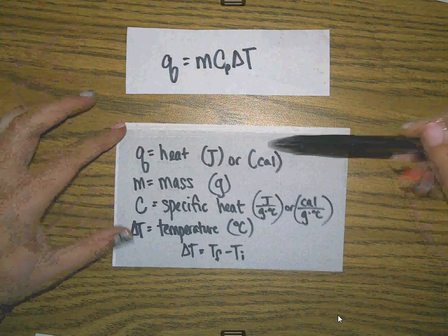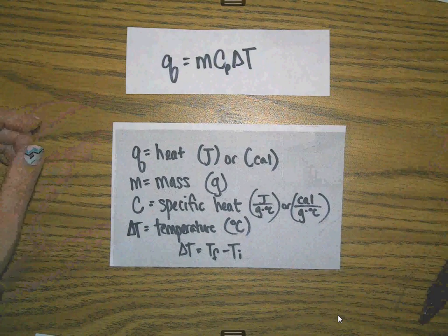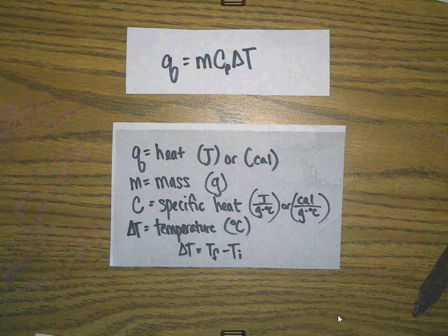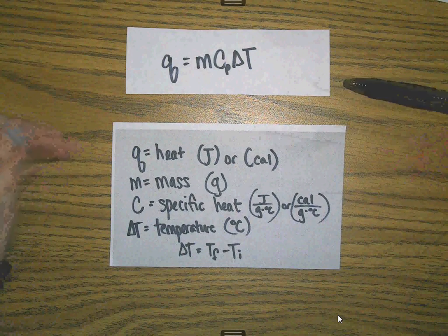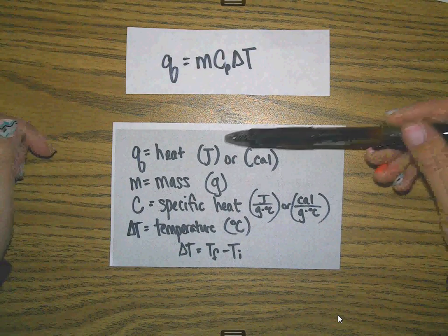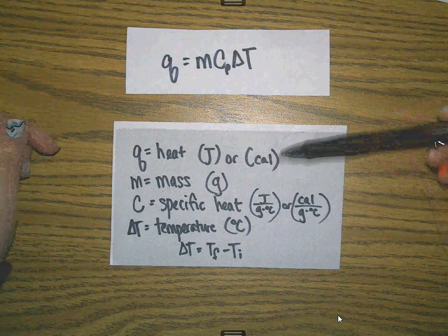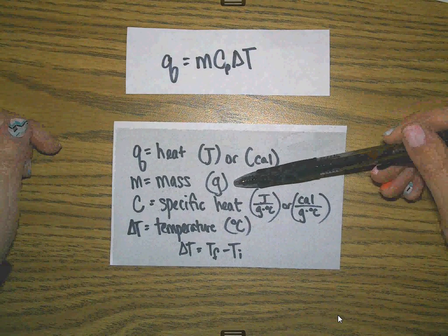I have the breakdown of the formula in front of you. Use the power of video, pause if you need to in order to look at this. You can see that q stands for heat, and there are two possible units: joules or calories. M stands for mass, and it has to be measured in grams.